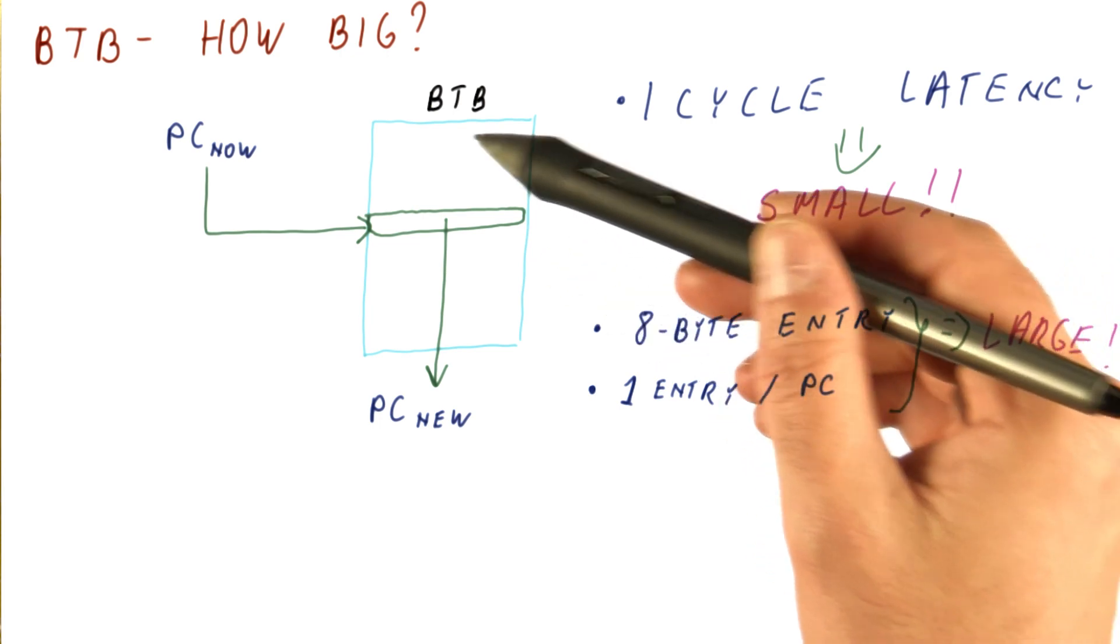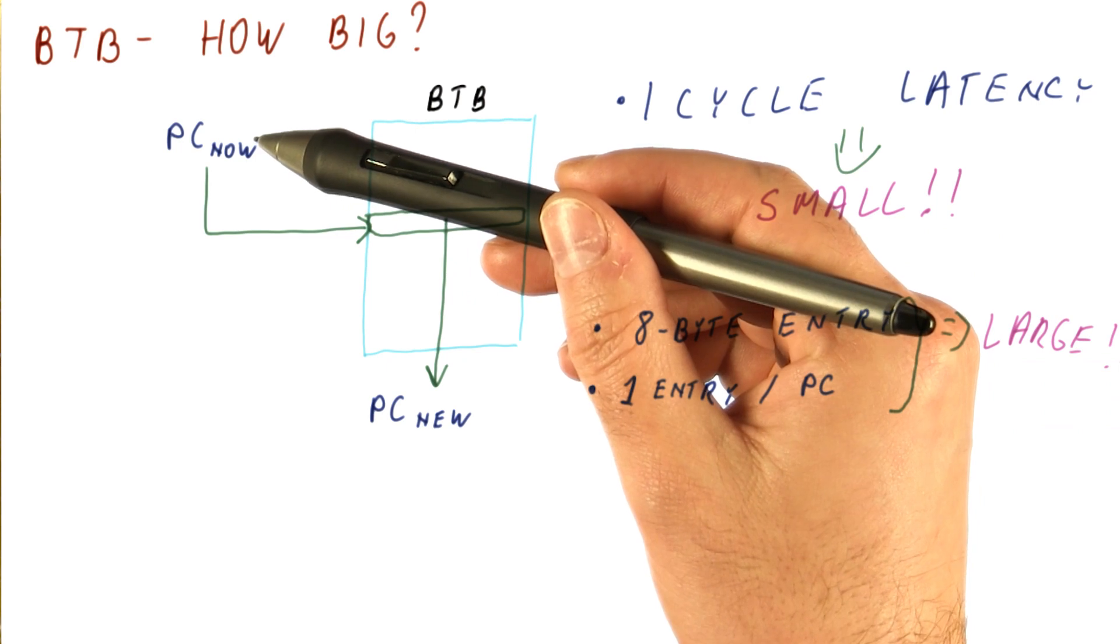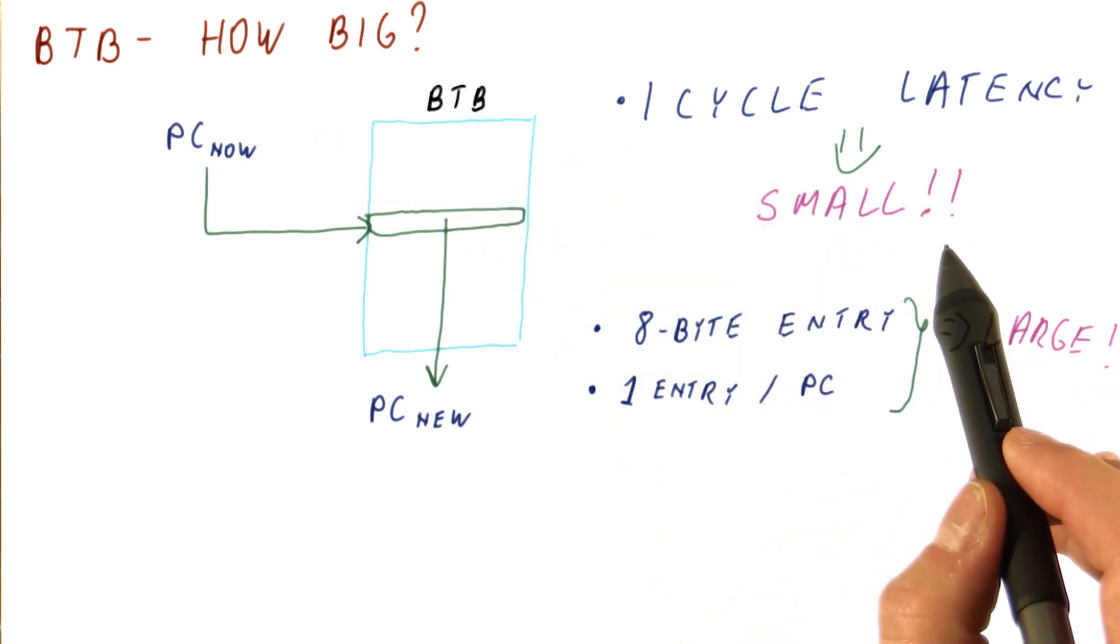So we cannot have a dedicated entry in the BTB for every possible PC address. We need the BTB to be much smaller than that. How do we do that?